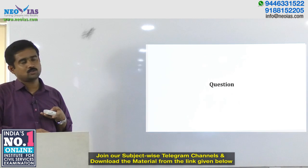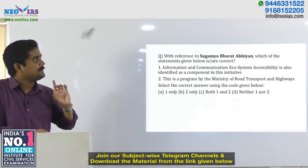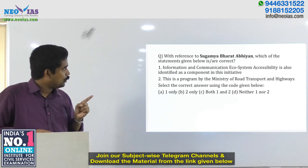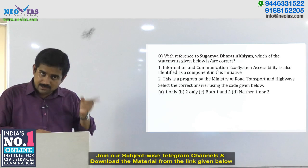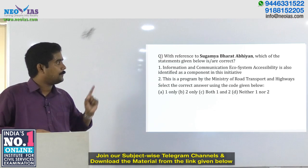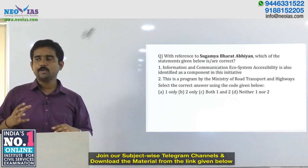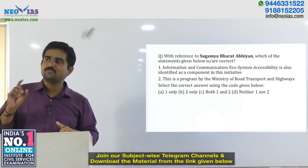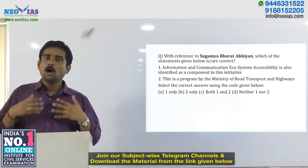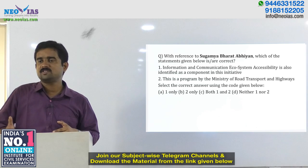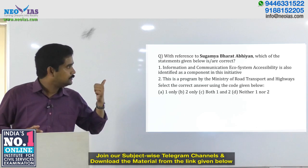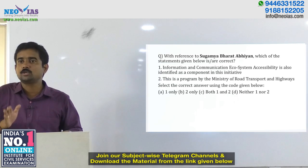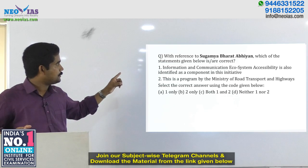A UPSC-pattern question: With reference to Sugamya Bharat Abhiyan, which of the statements given below is or are correct? Statement one: information and communication ecosystem accessibility is also identified as a component in this initiative. Usually a person who has not gone through the scheme may think information and communication accessibility is not relevant to a person with physical disability, and may mark statement one as wrong. But this is actually included, making statement one true.